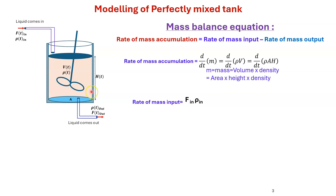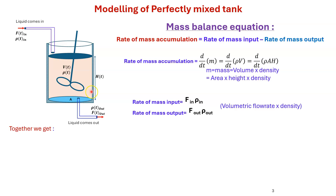The rate of mass input is F_in·ρ_in, and the rate of mass output is F_out·ρ_out, where F_in and F_out are volumetric flow rates and ρ is the density. Putting it all together: dm/dt = d(ρV)/dt = d(ρAH)/dt = F_in·ρ_in − F_out·ρ_out.